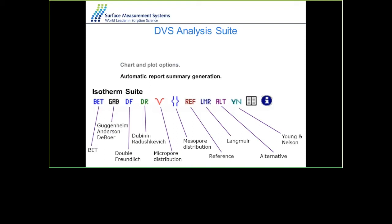The isotherm analysis software offers a range of macros for analyzing and fitting different equations to the isotherm. These include BET surface area, GAB (an extension of the BET equation), the DR macro for micropore/mesopore volume and size distribution using organic vapor, and other equations including Langmuir and Young-Nelson — ideal for determining monolayer or multilayer processes.